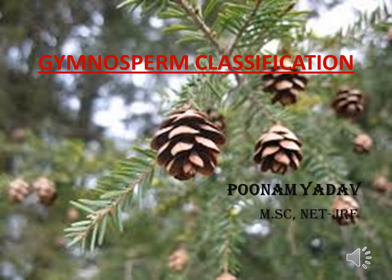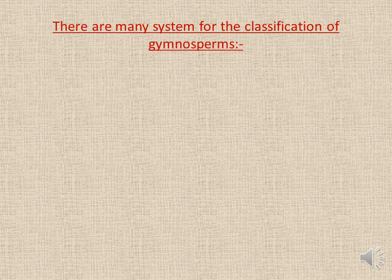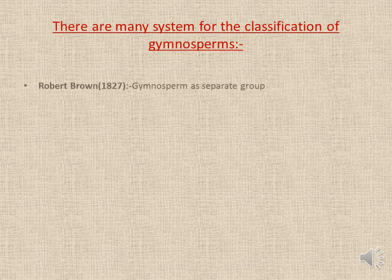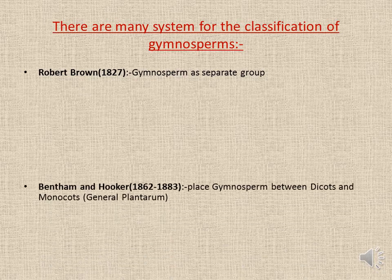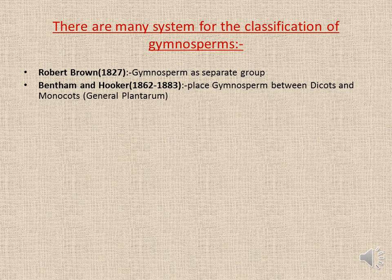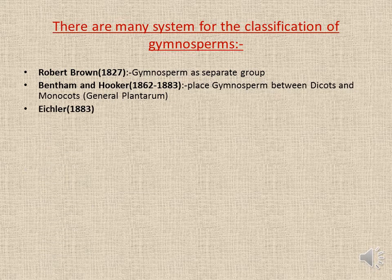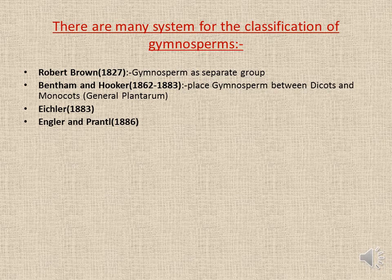Hello everyone. Today our topic is Gymnosperm classification. Many different types of classifications have been proposed from time to time. Robert Brown classified Gymnosperms as a separate group. Bentham and Hooker placed Gymnosperms between dicots and monocots. Asher classified Gymnosperms using Engler and Prantl's classification system.